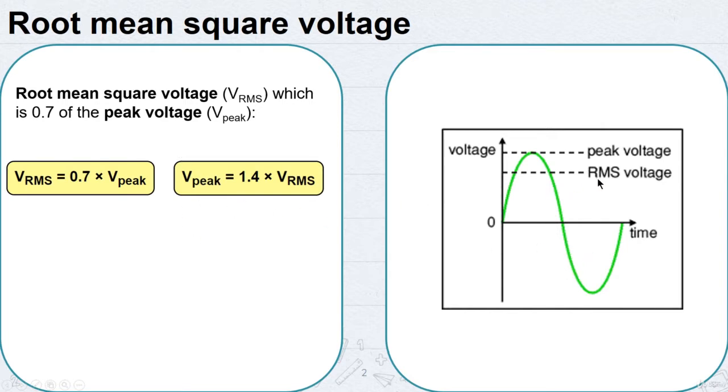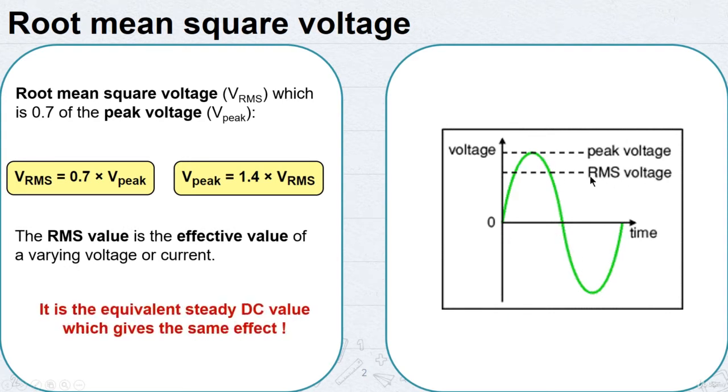So the RMS value is the effective value of varying voltage or current. It is the equivalent steady DC value which gives the same effect.